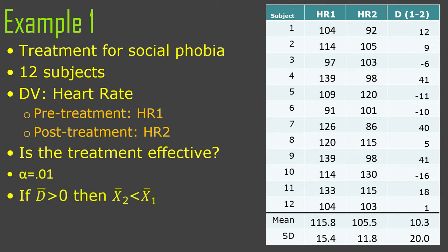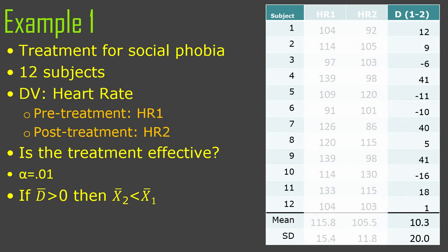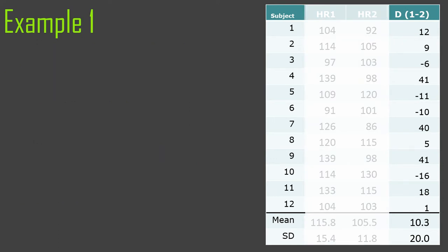So if d-bar is greater than zero, then that means mean two is less than mean one, which is what we want. If we're doing one minus two, and that value on average is greater than zero, then one is greater than two. So we're going to look at the d-bar scores only — everything else just fades into oblivion. We're just pretending those d-bar scores are a single set of raw scores, and basically we're going to do a one-sample t-test on them.